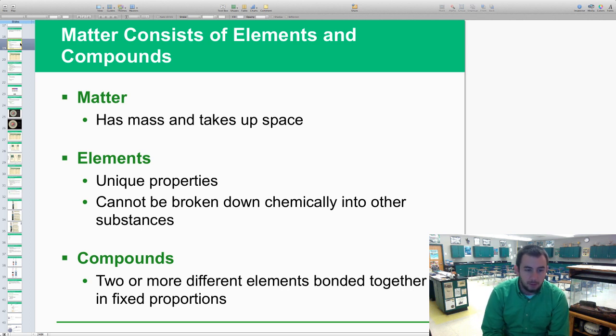Compounds are two or more different elements bonded together with some type of bond—hydrogen, covalent, ionic bonds—together in a fixed proportion, in a certain proportion that makes them a specific compound.